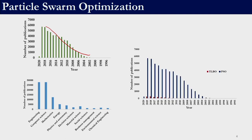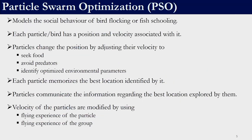This plot shows the comparison between TLBO and PSO. It is unfair to compare given that TLBO has been recently proposed whereas particle swarm optimization was proposed way back in 1995. Still, people have started to use TLBO as can be seen. Particle swarm optimization models the social behavior of bird flocking or fish schooling. The solution in optimization is known as a particle or bird in particle swarm optimization.